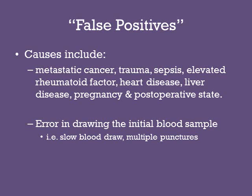A D-dimer test may have a false positive result for a variety of reasons other than a DVT or PE. Some of these include metastatic cancer, trauma, sepsis, and elevated rheumatoid factor.